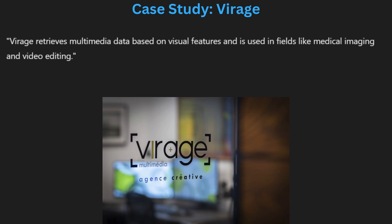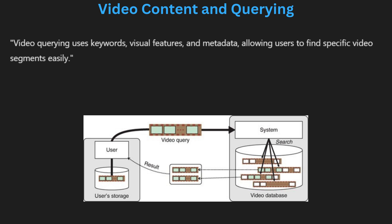Video content querying enables users to search and retrieve specific video segments based on keywords or visual patterns. The process involves analyzing the video, often through keyframe extraction and tagging specific scenes with metadata. For example, in a news broadcast, different topics can be tagged, allowing users to search for and jump directly to the desired part. This makes video databases more user-friendly, especially in large repositories like streaming platforms, educational archives and media libraries. It saves time by allowing quick access to relevant video content.